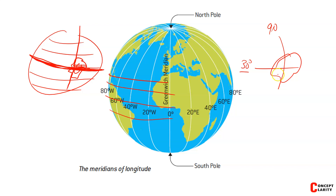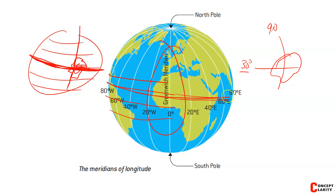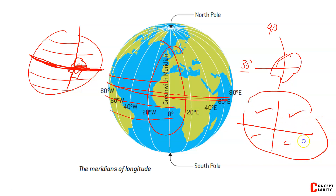When 0 degree latitude and 0 degree longitude both meet, they divide the earth into 4 equal parts. Both latitude and longitude are important. Longitude is used to fix the place, and when 0 degree latitude and 0 degree longitude meet, they divide the earth into 4 equal parts.